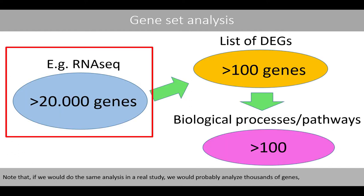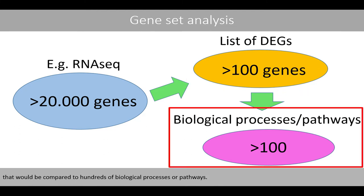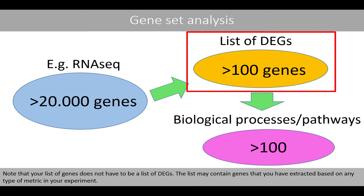Note that if we do the same analysis in a real study, we will probably analyze thousands of genes, and our list will probably consist of more than 100 differentially expressed genes, compared to hundreds of different biological processes or pathways. Note that your list of genes does not have to be a list of differentially expressed genes. The list may contain genes that you have extracted based on any type of metric in your experiment.